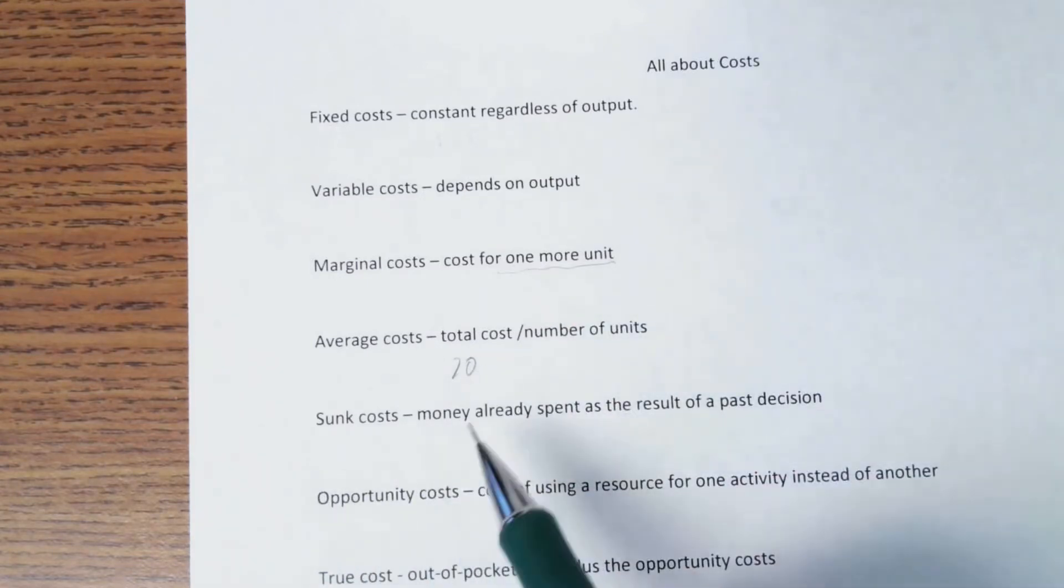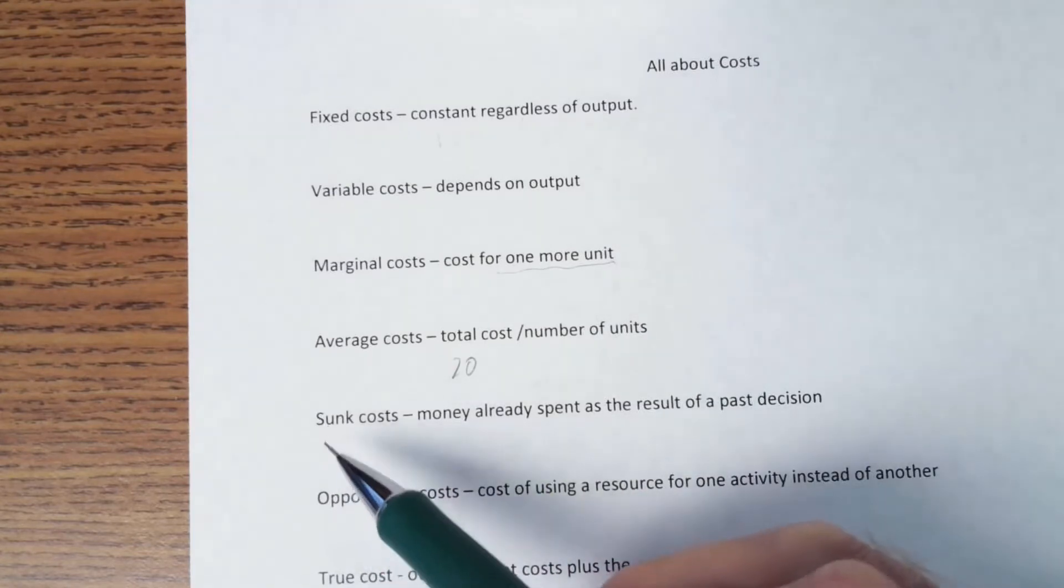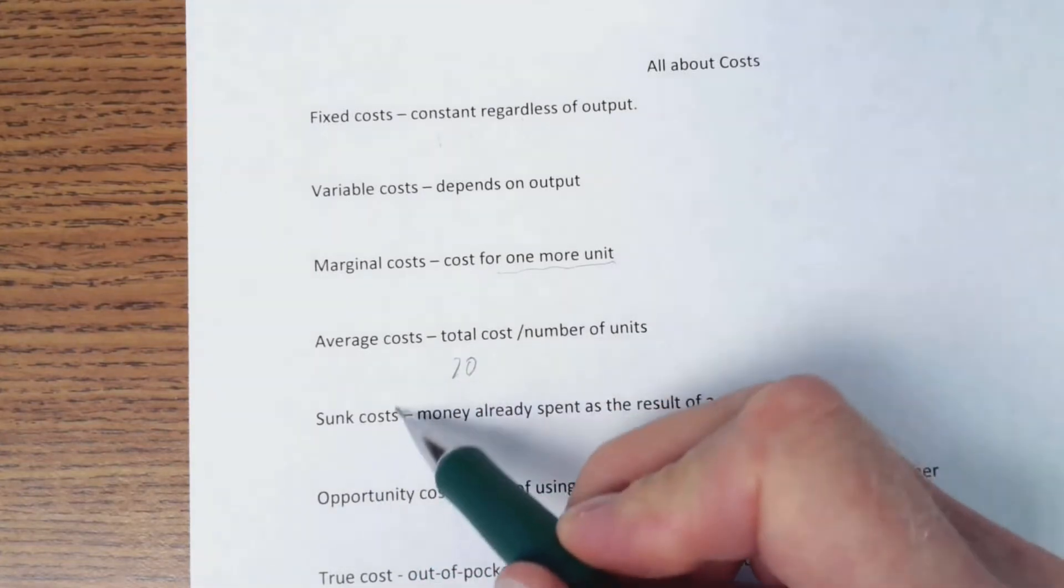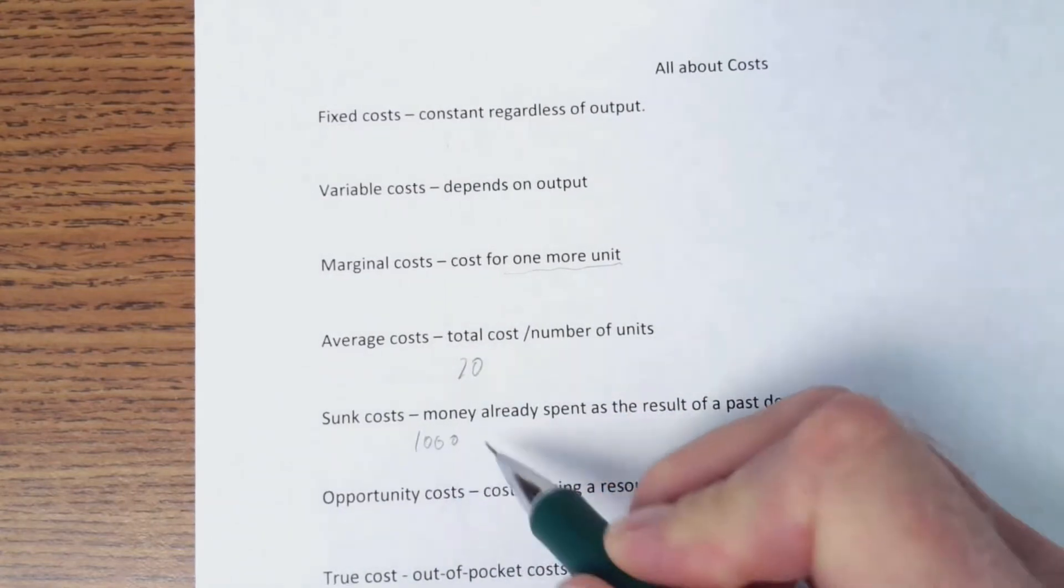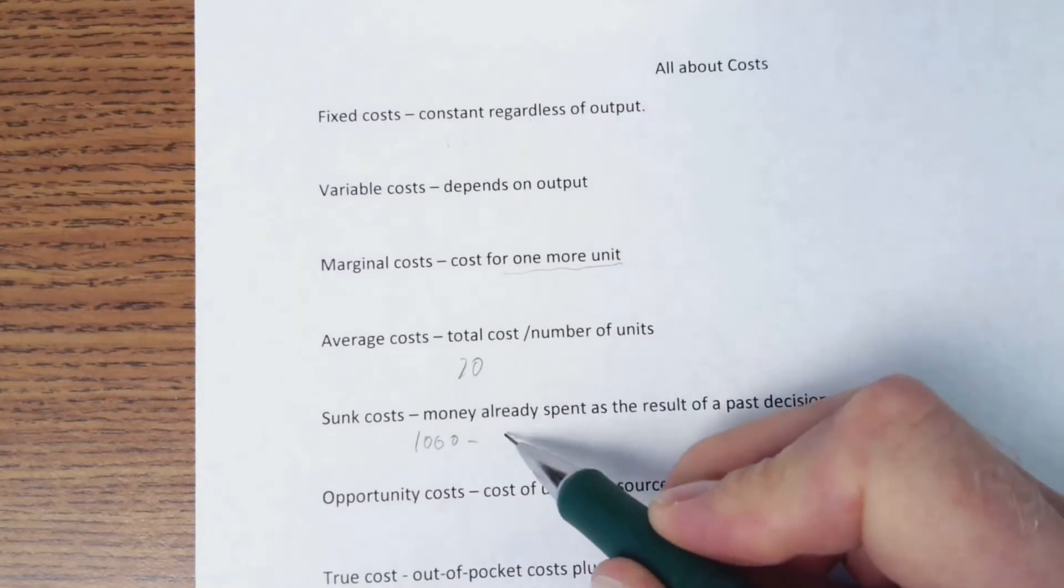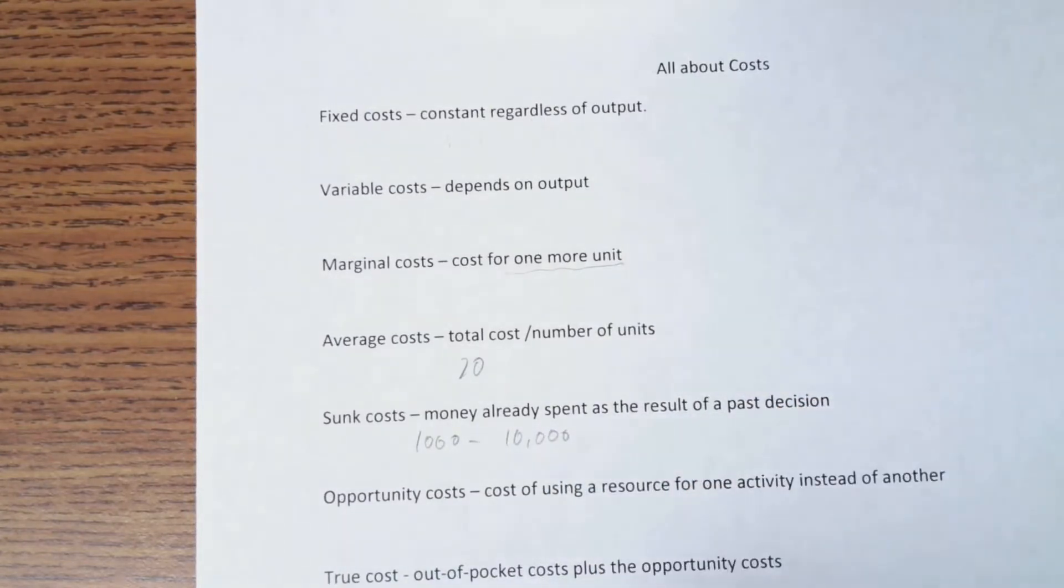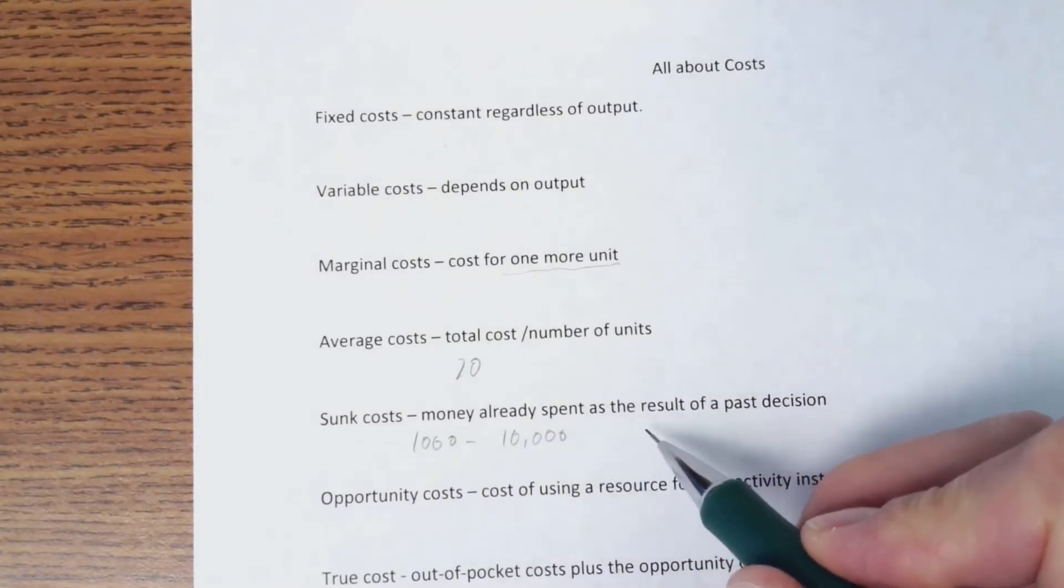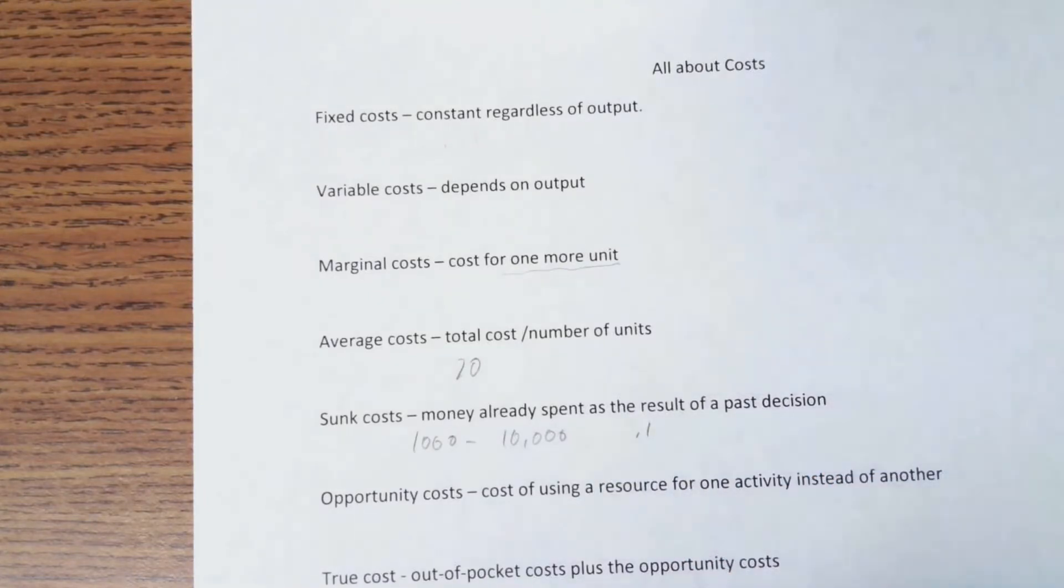Sunk cost is money that's already spent as a result of a past decision. Now, these sometimes can get emotional, and we'll make a wrong choice because of emotion. So for example, a sunk cost would be, let's say we buy a copy machine, and the copy machine costs us $1,000. And we're printing, say, 10,000 copies a month. And it costs, the printing ink and toner stuff costs us $0.10 a sheet.